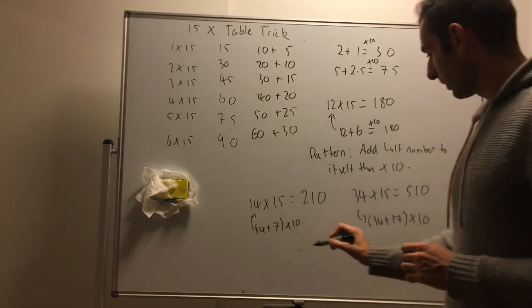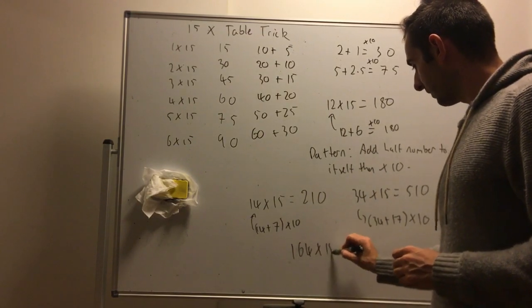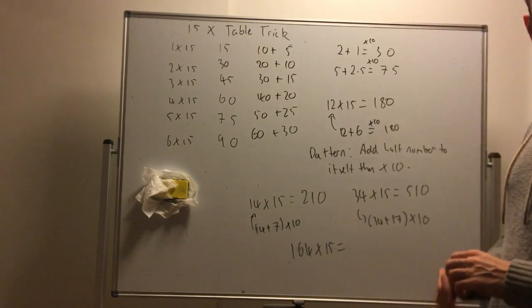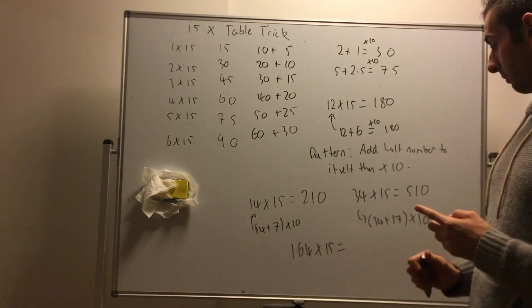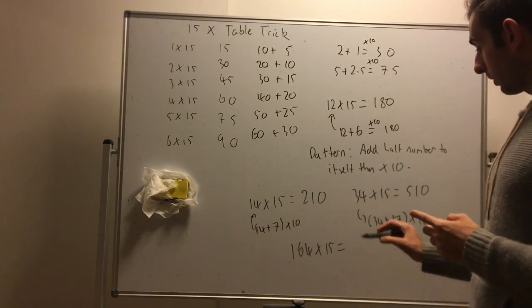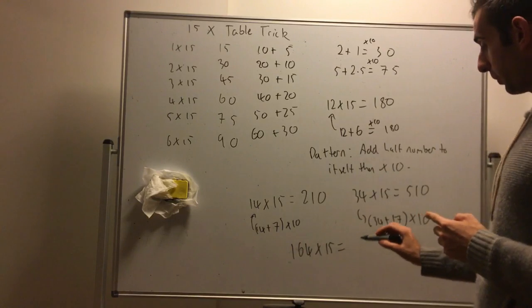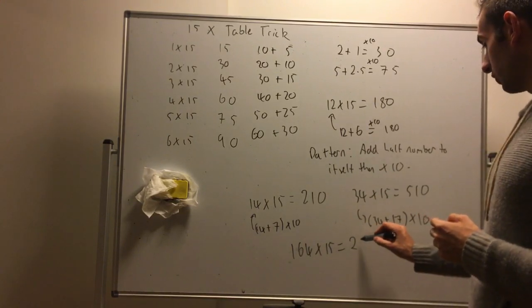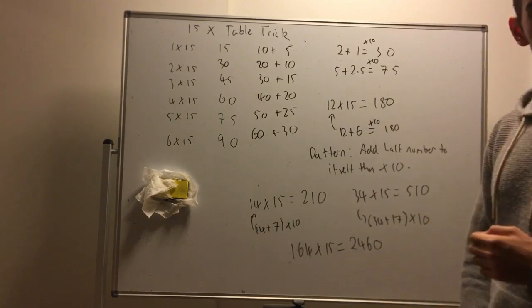Let's do a really high number. 164 times 15. This can still be done in your head but it'll take a little longer. What's half of 164? Well that's 82. So if we add 82, 264, that's 246 and then we just chuck a zero on the end.